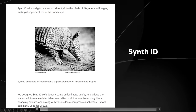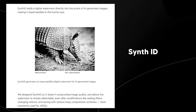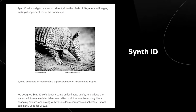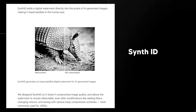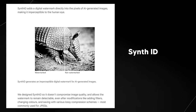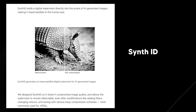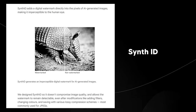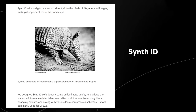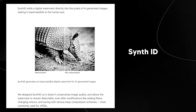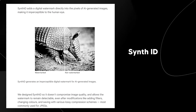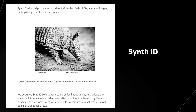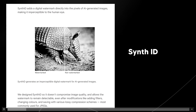The watermark is designed so it doesn't compromise image quality and remains detectable even after modifications like adding filters, changing colors, or saving with lossy compression like JPEG. This is really important because we're entering an era of images where we don't know what's real. If Google becomes number one in image generation, having a way to back-check and verify whether something is AI generated will be crucial, and other companies should take note.